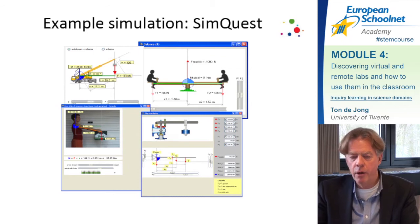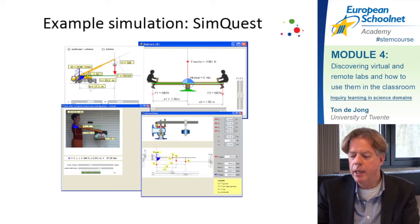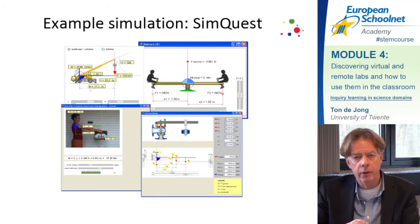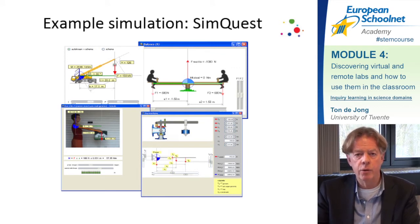Here you see four screenshots of a larger environment called SimQuest. We have about 30 to 40 simulation-based learning environments spread around the world, translated into many languages. For example, in the upper left corner you see a simulation of a crane about momentum — you can change the length of the arm, the forces, et cetera. You see those changes reflected in multiple representations: the crane itself, a table, a graph, and a formula — all going together.